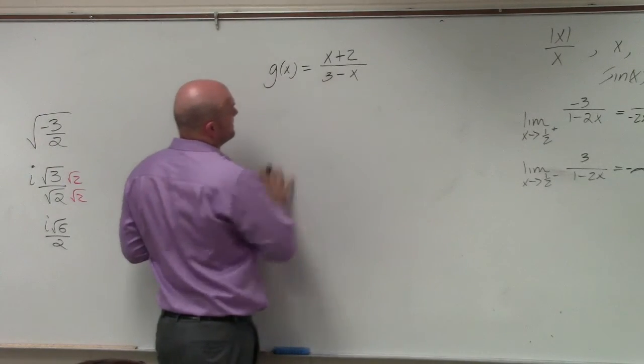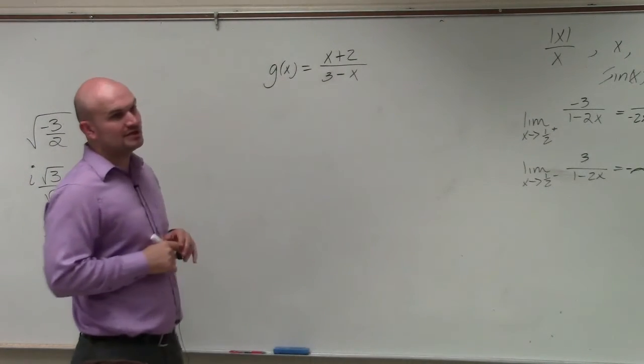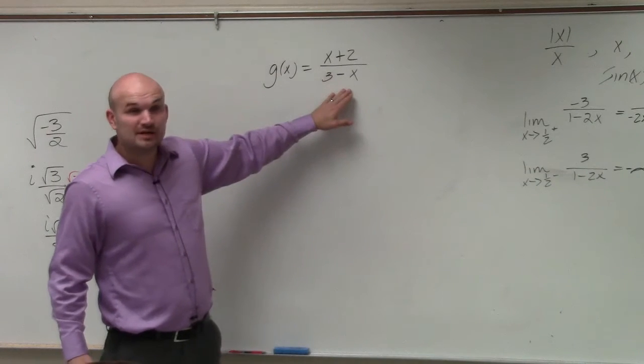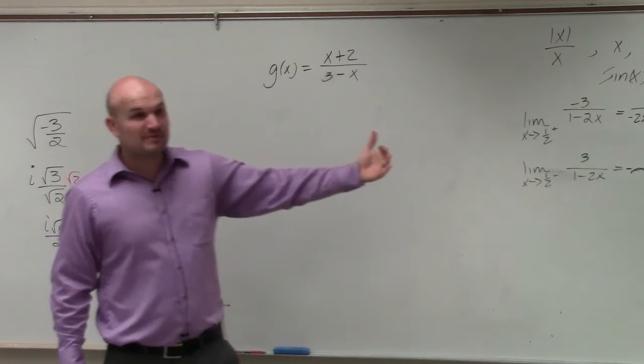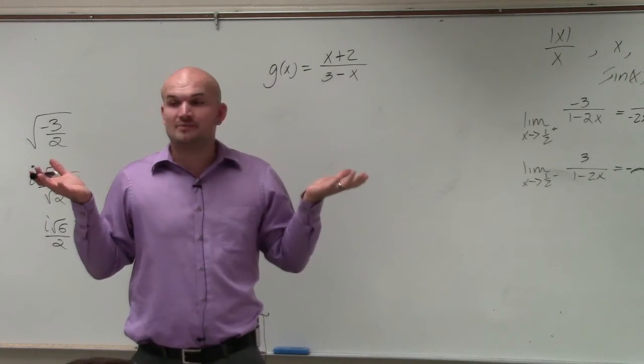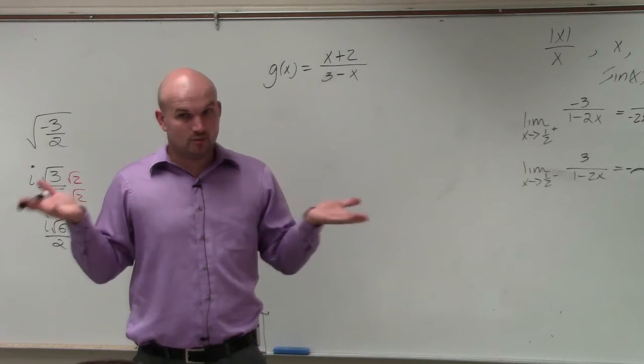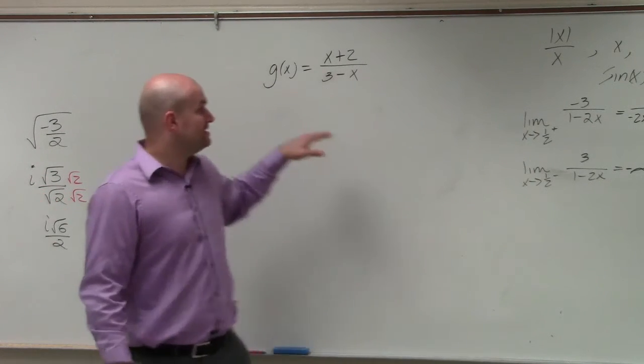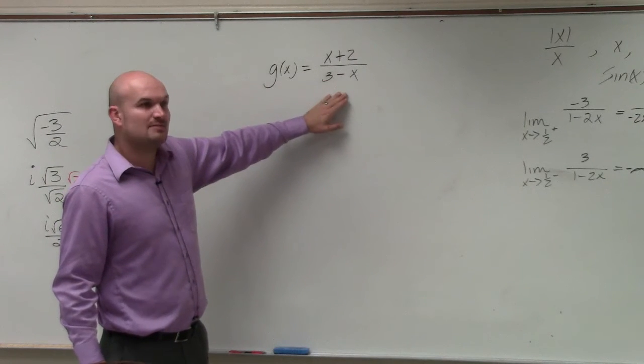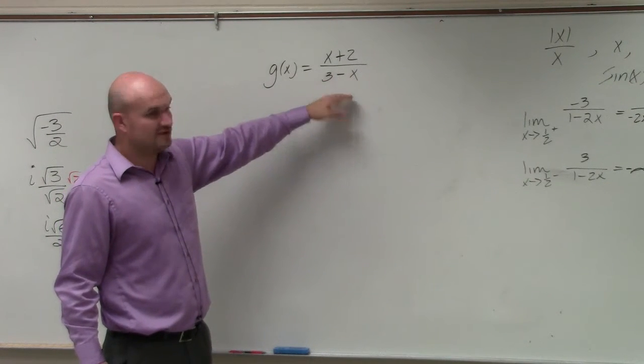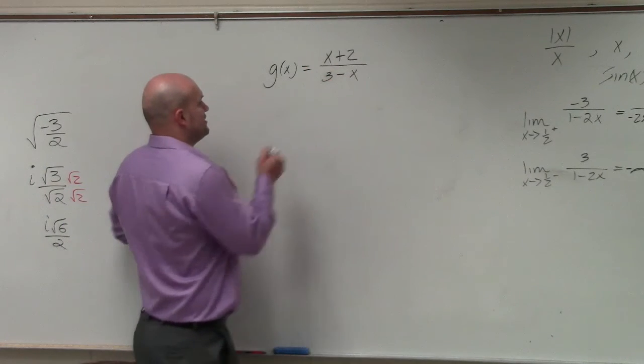So again, in identifying the vertical asymptotes, basically we want to find when our denominator is equal to zero. However, remember, be very careful because our discontinuities could be holes or they could be asymptotes, right? They could be one or the other or both. So we need to make sure that we can't simplify this equation or this function any further, which we cannot factor it.